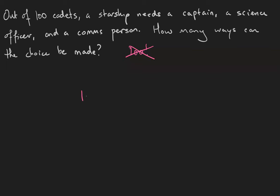So we have a hundred choices for our captain. But once we've chosen the captain, we need to choose a different person for the science officer, so there are 99 choices. And then there are 98 choices for the communications person. Therefore, there are 970,200 different ways this starship's bridge could be configured.